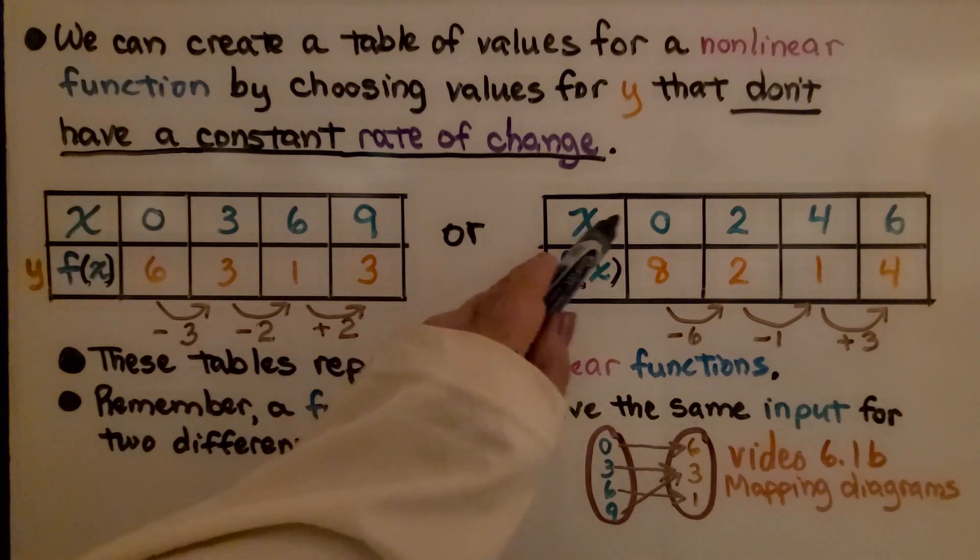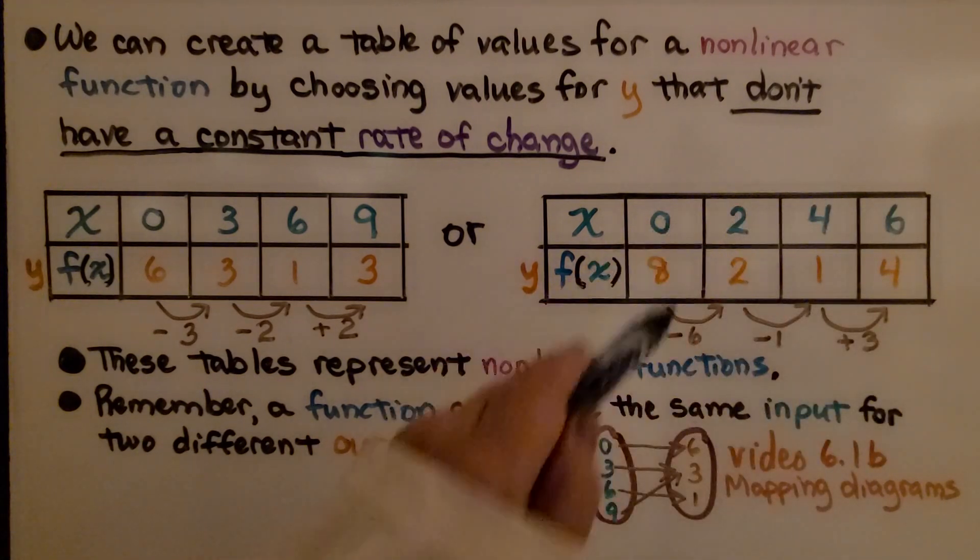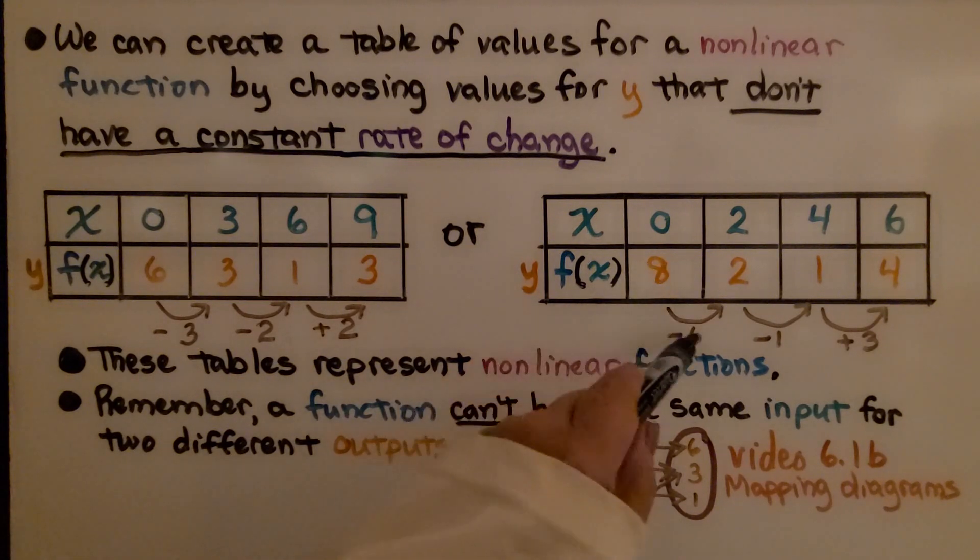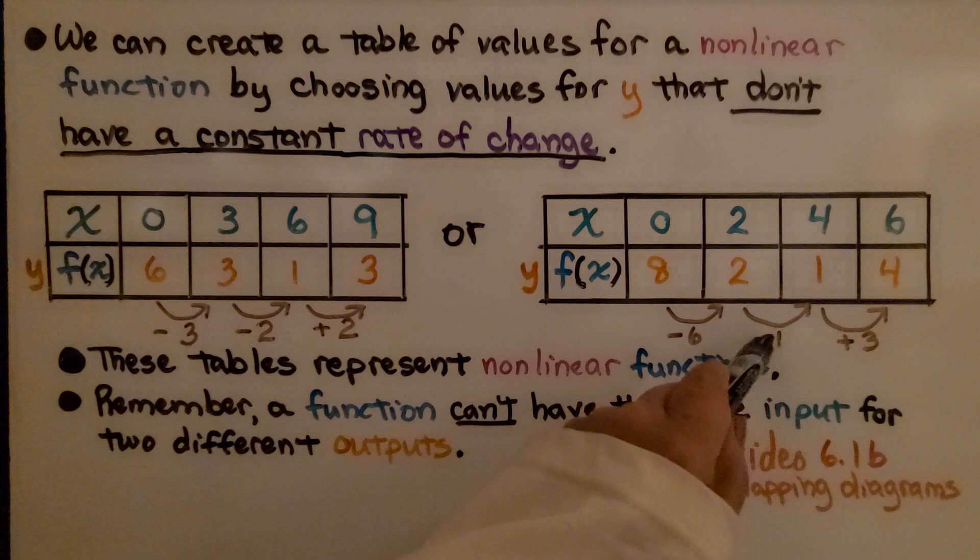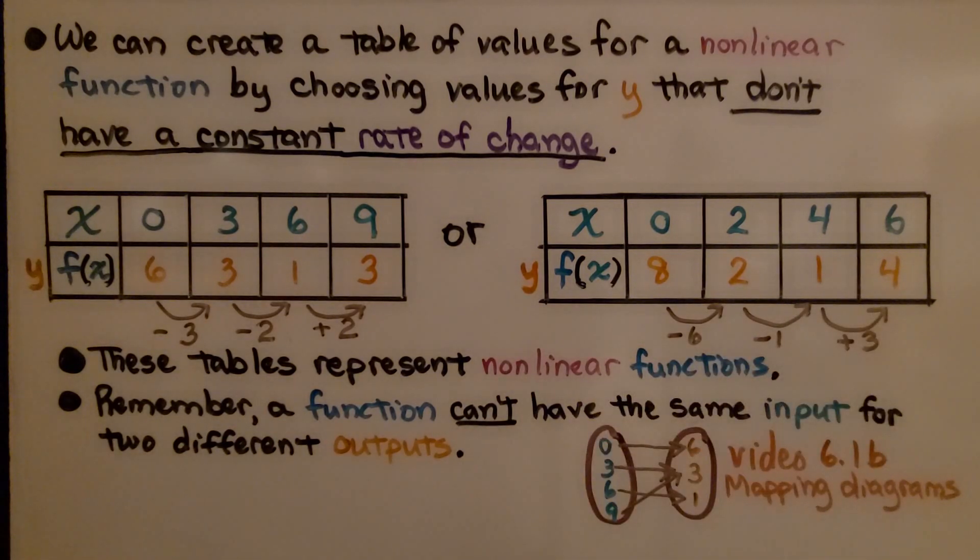Here's another one. The x is going zero, two, four, six, skip counting by twos. But look at the f of x. It's going from eight to two, that's a minus six. Then down to one, which is a minus one. But then it's going back up again, that's a plus three to get to four. These tables represent nonlinear functions.